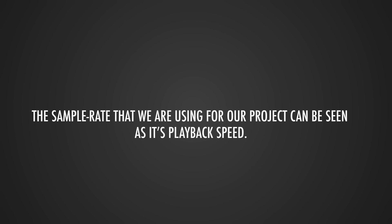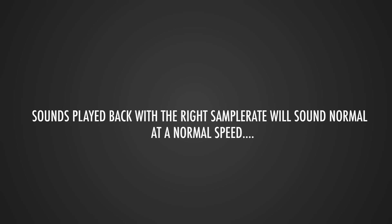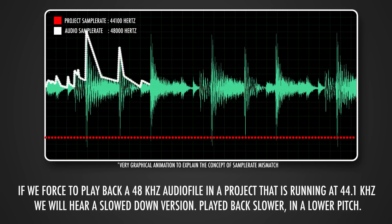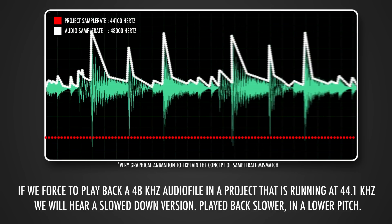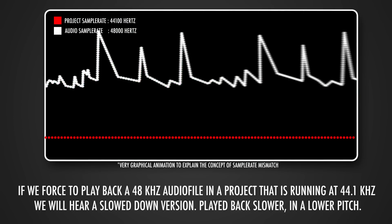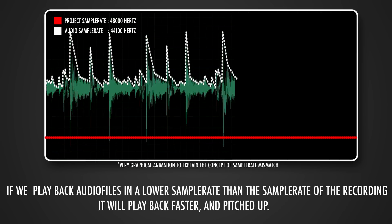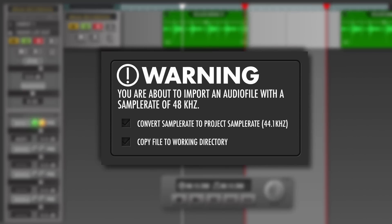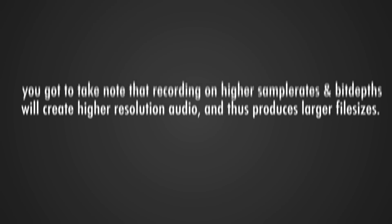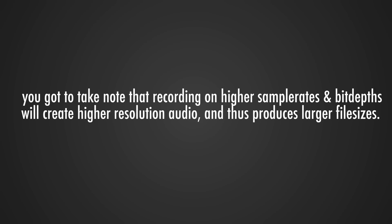The sampling rate used in a project can be seen as its playback speed. Audio files matching the project's sample rate play back at normal speed. But if you force a 48 kHz audio file to play back in a project running at 44.1 kHz, it will sound slower and pitch down. When playing back files at a lower sample rate than the recording, you'll hear a sped-up version in a higher pitch. Most DAWs, however, will give a dialog box upon importing audio files when the sample rates don't match — so it's kind of a safety net.